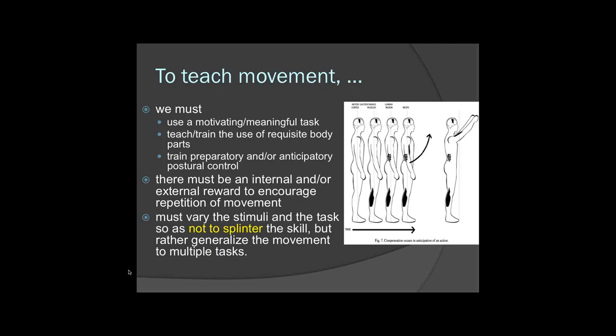When you splinter a skill, you do something like the old adage in OT of putting pegs into a pegboard all the time. If you constantly put pegs into a pegboard, you learn that task really well, but can you transfer it to picking up a quarter and putting it into a vending machine? Usually not. In order to train a task, you have to provide various stimuli so the person reaches for and picks up various things. You're still reaching, you're still getting an approximate idea of what you're doing, but just the subtleties are going to change.